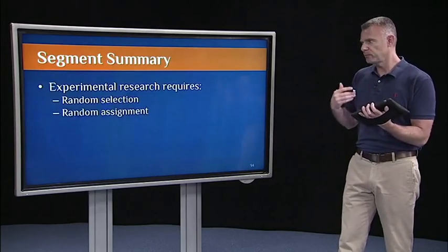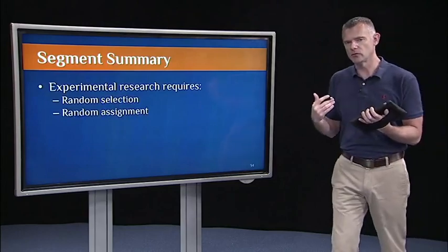So to recap, experimental research requires and critically depends on this idea of randomness. One, random selection from the population so that our sample is randomly selective. And two, random assignment to conditions so that we have similar types of samples across the conditions in the experiment.